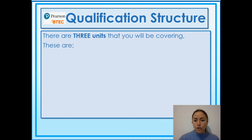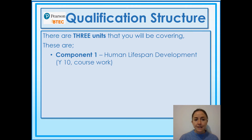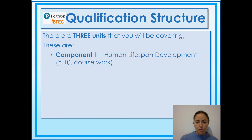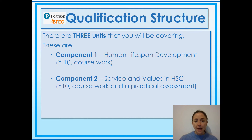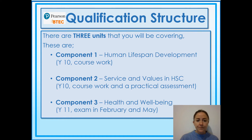There are three compulsory units. Component Unit 1 is on human lifespan development — that's a coursework unit. Component Unit 2 is Services and Values in Health and Social Care, which you do in Year 10 as well. That is also a coursework unit and you do a practical assessment of a role play.